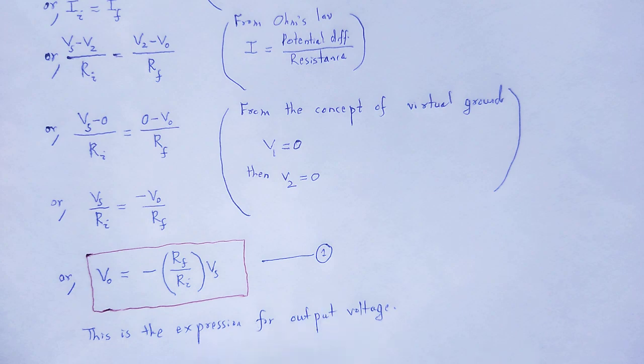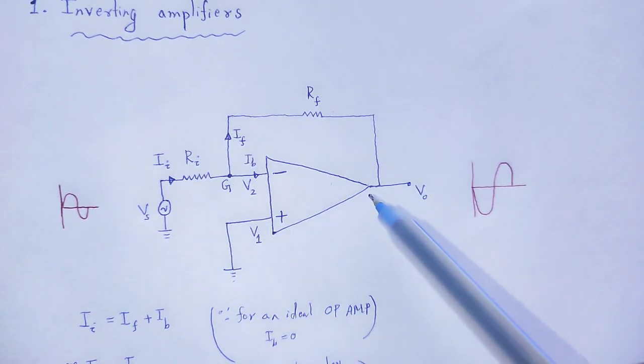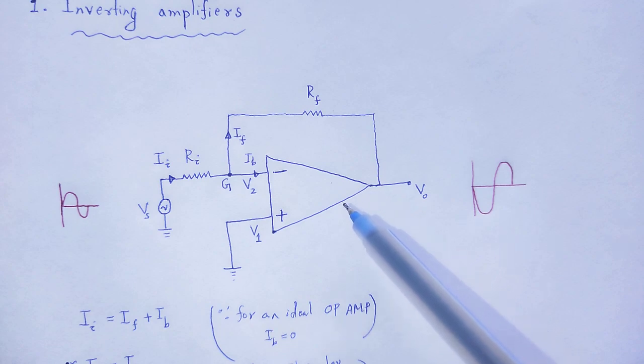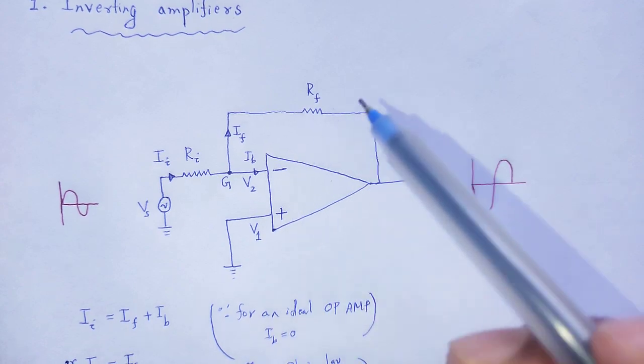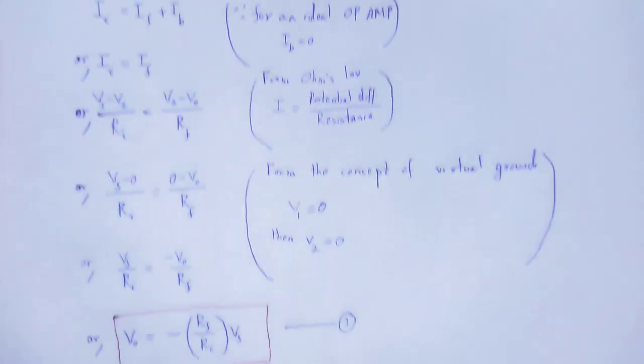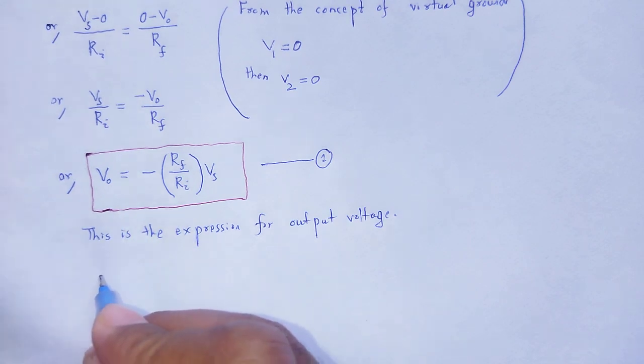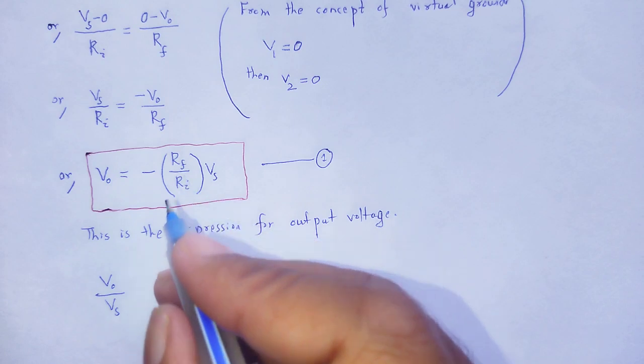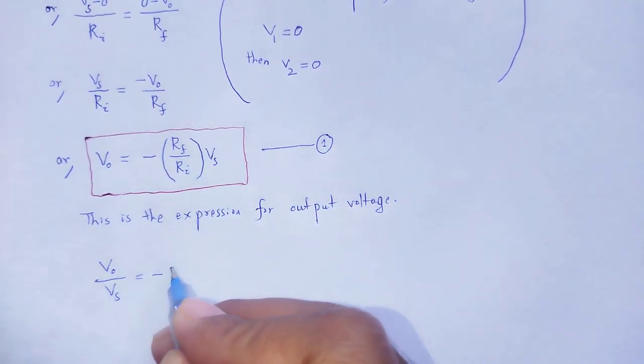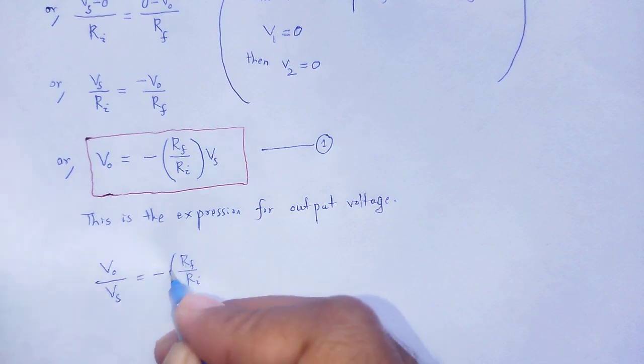Next, as that one is a closed loop, then we have to calculate the closed loop voltage gain. From that expression, output voltage to Vs, Vo by Vs is equal to minus Rf divided by Ri.